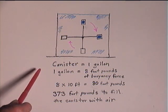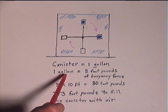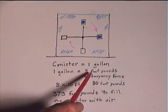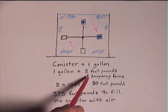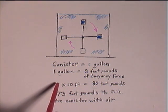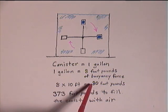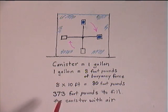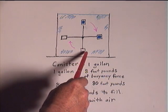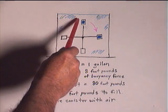Now each canister equals 1 gallon of air. 1 gallon of air equals 8 foot-pounds of buoyancy force. The 8 foot-pounds of buoyancy force times 10 feet, the height of the tank, equals 80 foot-pounds. That's how much you get from the rotation of each air-filled canister.